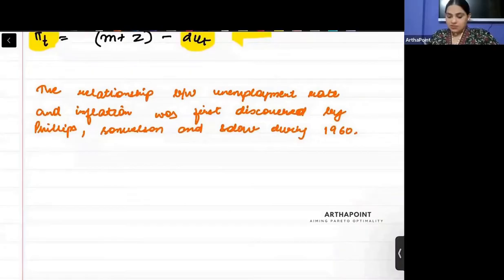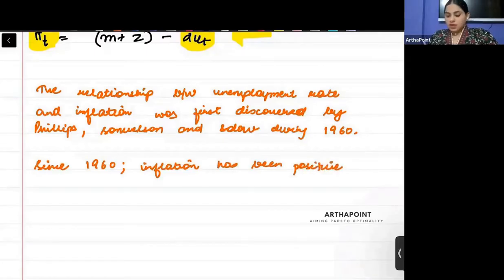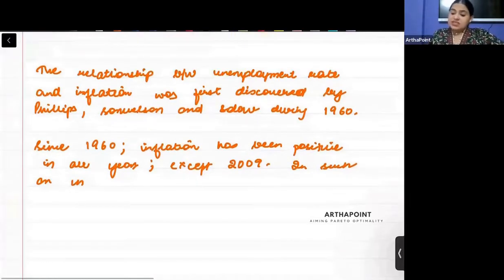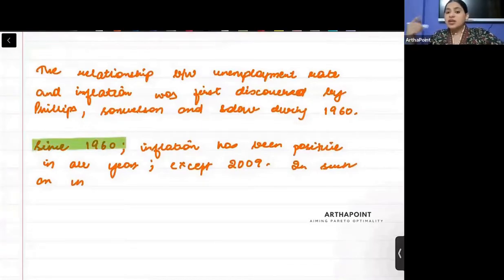Please write down: since 1960, inflation has been positive in all years except 2009. In such an environment, inflation has been positive. Prices increase every year, that is inflation. So I'm saying since 1960 it has been observed that prices have been continuously increasing.